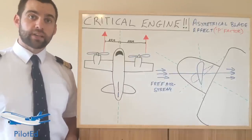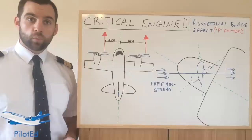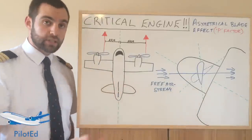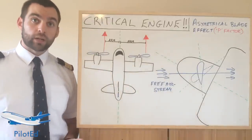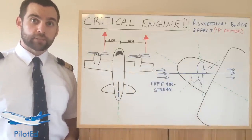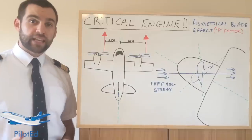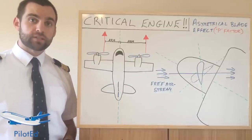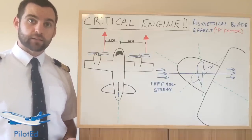Now in a two-engine propeller-driven aircraft, with the engines being symmetrically mounted, you would ask: why is there a critical engine? This is because of the asymmetric blade effect, otherwise known as the P-factor, which I'm going to explain to you.